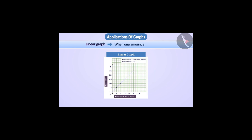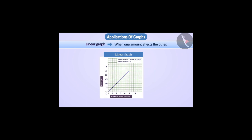If all the line segments in the line graph are in the same line, then such a line graph is called a linear graph. In such situation, we can get a linear graph when one amount affects the other.